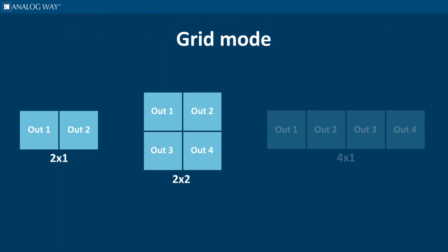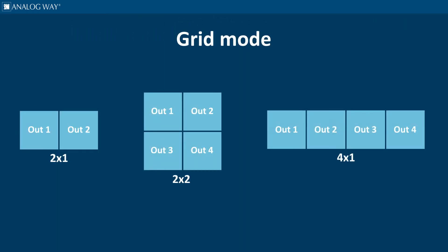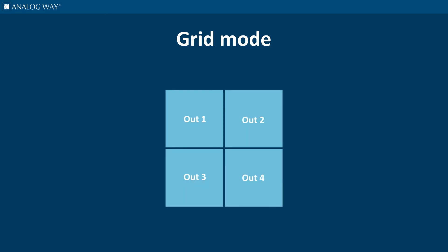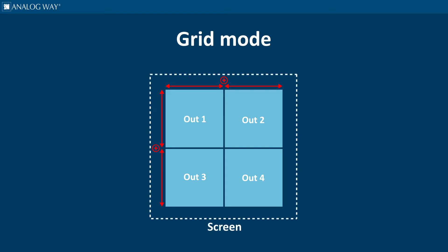When using the standard grid mode, LiveCore allows you to arrange the output in a grid — 2x1, 2x2, 4x1, and so on and so forth. Grid mode assumes that the outputs are stacked in columns or rows. The resolutions of each output are added together to create the screen.